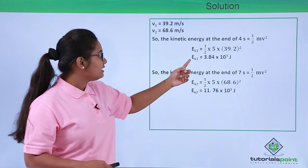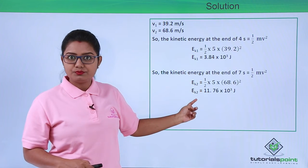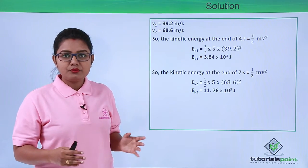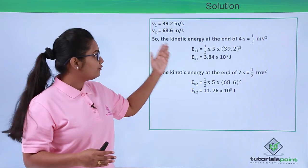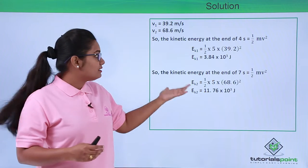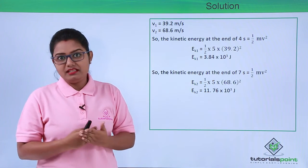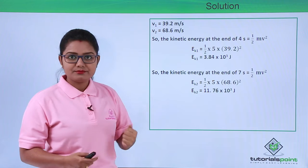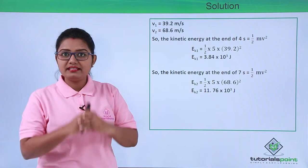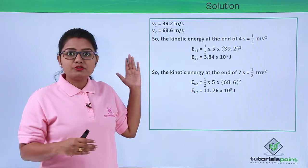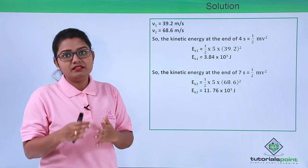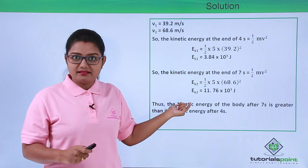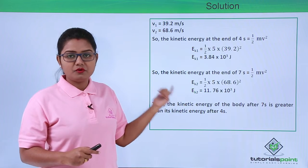Clearly, Ek1 is less than Ek2, which means the kinetic energy of the body at the end of 7 seconds is greater than at the end of 4 seconds. The reason is that the velocity of the body is lesser in the first case. Kinetic energy varies as the square of the velocity, so greater the velocity, greater will be the kinetic energy. Therefore, the kinetic energy after 7 seconds is greater than after 4 seconds.